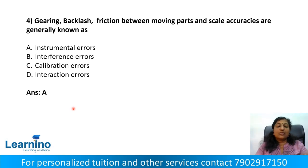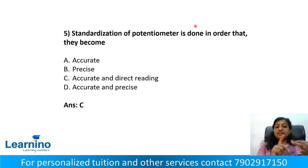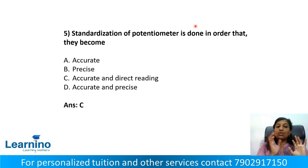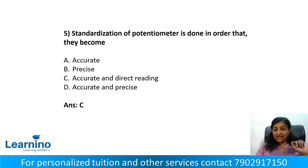Question number 5. Standardization of a potentiometer is done in order that they become: option A, accurate; option B, precise; option C, accurate and direct reading; option D, accurate and precise. By standardization of a potentiometer, they become accurate and direct reading — option C is the correct answer.